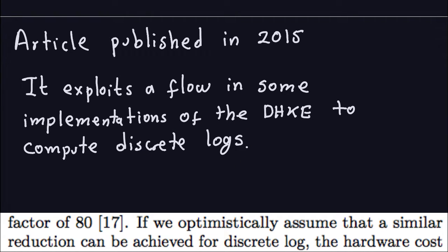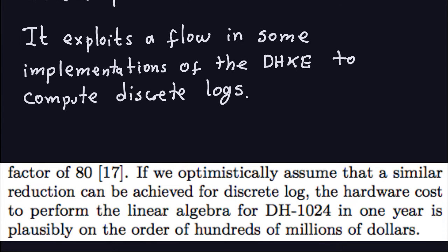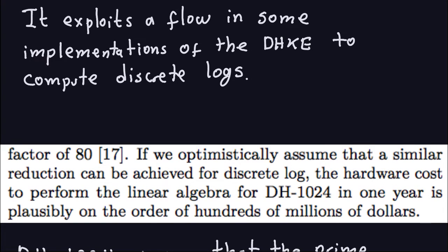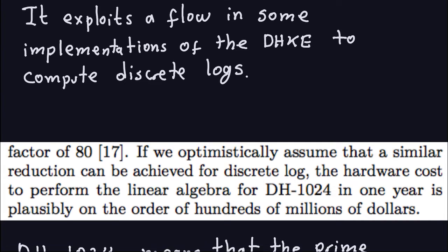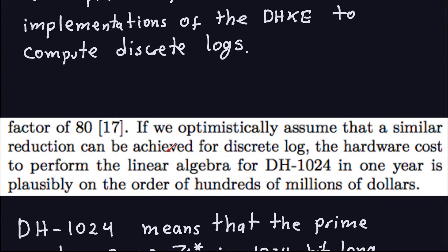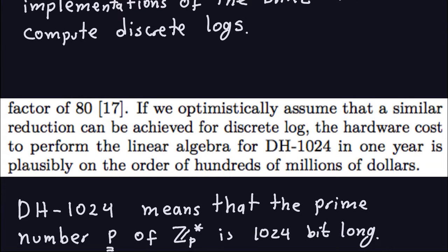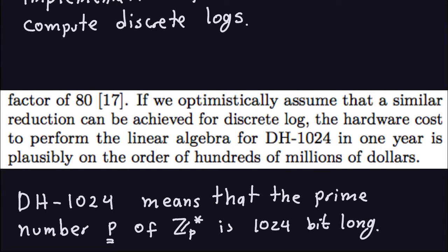The way this is done involves computing discrete logs for primes of certain lengths. One interesting point from the paper — which you can find online — is what they call DH1024. This refers to computing discrete logs for the Diffie-Hellman key exchange where the prime is 1024 bits long. You can do this pre-computation with certain machines, but it has a cost: they estimated it at around one hundred million dollars.